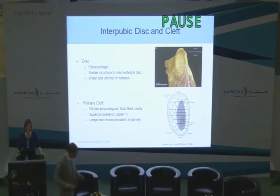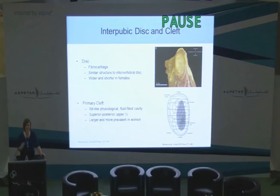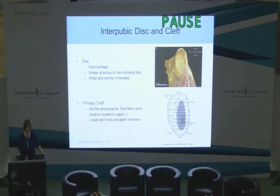The width of the disc — any takers on how wide that is? It's about four millimetres, so it's fairly small. We know that we can expect to see a primary cleft in the disc which is physiological — it's a small amount of fluid. The grey area in the bottom image is supposed to represent the cleft, but it's usually confined to the superior posterior upper half of the disc, so this isn't a very good representation of it. But it gives you an idea of where you might see it.